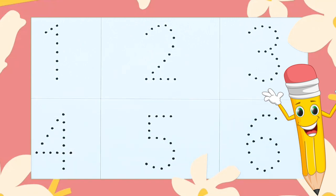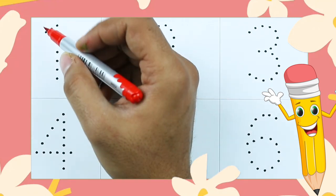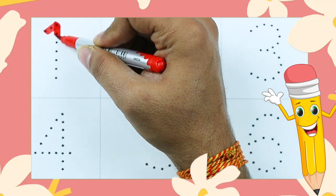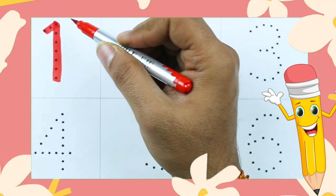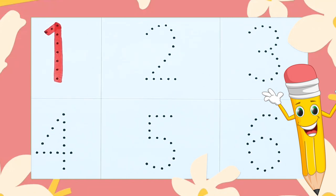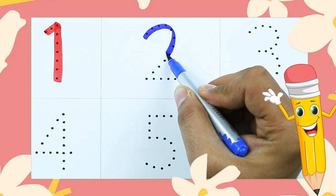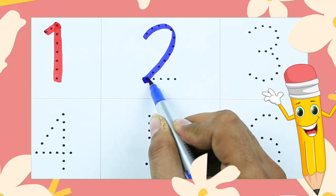How to write numbers 1 to 10. It's number 1, number 1 with red color. Number 2, it's 2 with blue color.